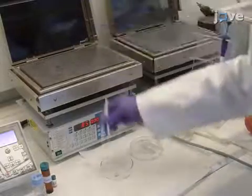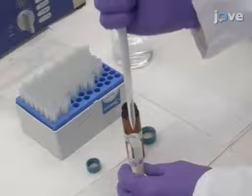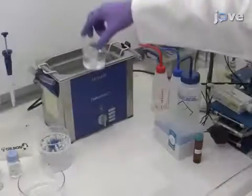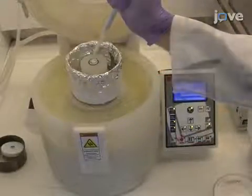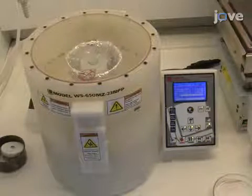To deposit the electron transport layer, first dilute 30 nanomolar titanium oxide paste with ethanol to a 2 by 7 weight ratio. Sonicate the suspension for 30 minutes. Then spin coat the sample with the suspension for 30 seconds at 5,000 RPM with a ramp rate of 2,000 RPM per second.